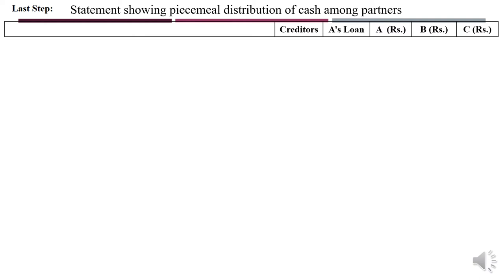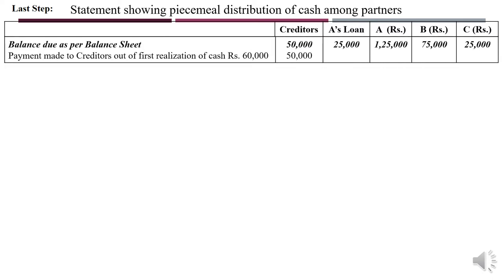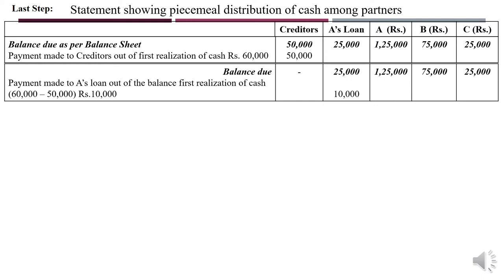Unlike the previous problem where we had only partners' columns, here we open two more columns for creditors and A's loan. The balance as per the balance sheet is: creditors 50,000; A's loan 25,000; A's capital 1,25,000; B's capital 75,000; C's capital 25,000. Out of the first realization of 60,000, we pay 50,000 to creditors, fully clearing them.